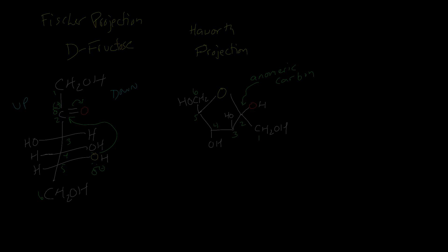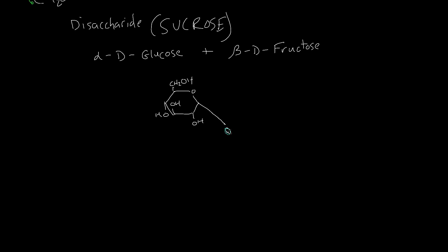This is from another video, I'm drawing the alpha-D-glucose, where I have the oxygen attached to the anomeric carbon drawing down, so this is alpha, and I'm just attaching it to the fructose structure that I just drew. And they're going to share that red oxygen, that oxygen which was red in the previous picture, is going to be shared with that glucose molecule to form a disaccharide, sucrose.